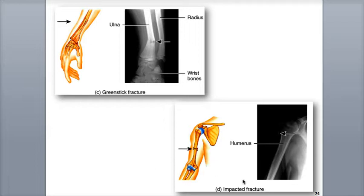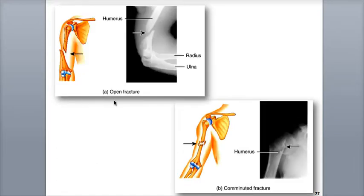An impacted fracture is where one end of a broken bone is forcefully pushed into the interior of the other. An open or compound fracture is when the ends of the broken bone pierce through the skin and are exposed. A closed or simple fracture, in contrast, does not break through the skin.